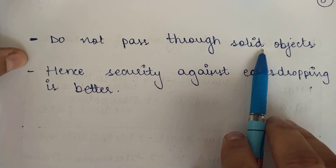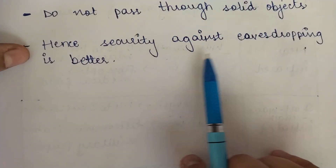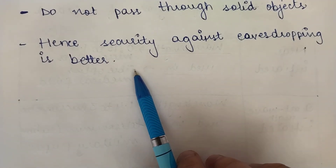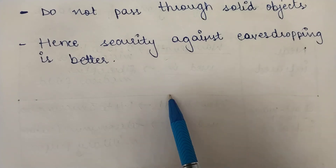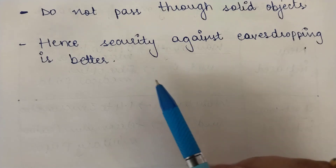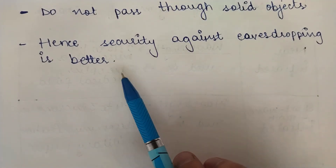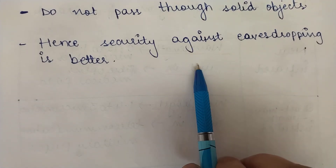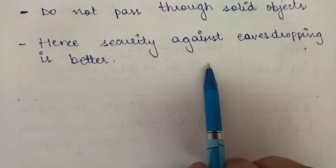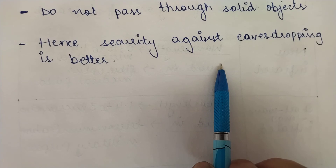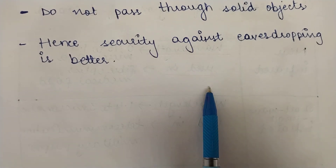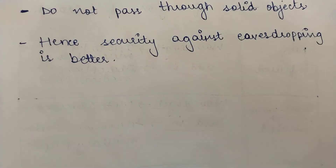One important property of infrared waves is that they do not pass through solid objects. This can be taken as an advantage — security against eavesdropping is better. For example, try standing between your TV remote and your TV; it won't work. This means an infrared system in one room will not interfere with a similar system in adjacent rooms or buildings — which is why you cannot control your neighbor's television with your own remote control.